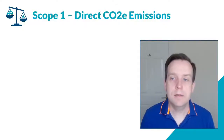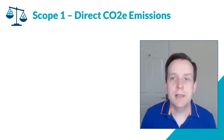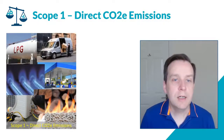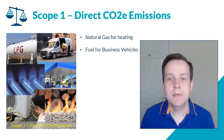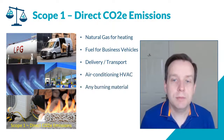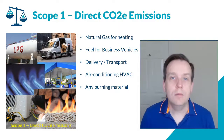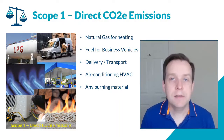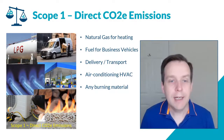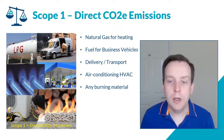Let's take a look at scope one, scope two, and scope three, which is how greenhouse gas emissions are defined. Scope one covers direct CO2 emissions that your business is directly responsible for: natural gas for heating, fuel for business vehicles, delivery transport, air conditioning and HVAC systems, specifically F-gases used in those systems, and any burning of materials such as natural gas, LPG, diesel, and petrol.